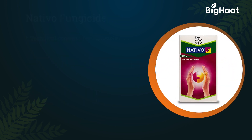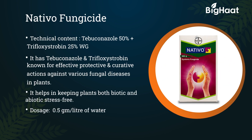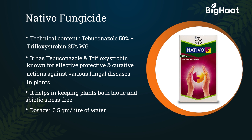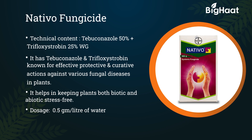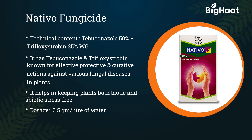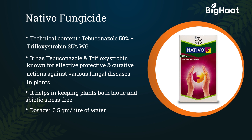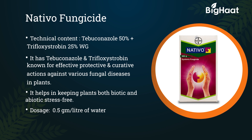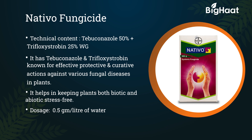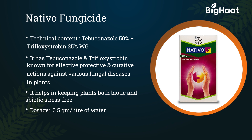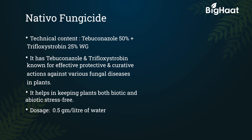Nativo fungicide: its technical contents are tebuconazole 50% and trifloxystrobin 25% WG. It has tebuconazole and trifloxystrobin, known for effective protective and curative actions against various fungal diseases in plants. It helps in keeping plants both biotic and abiotic stress free. Its dosage is 0.5 grams per litre of water.